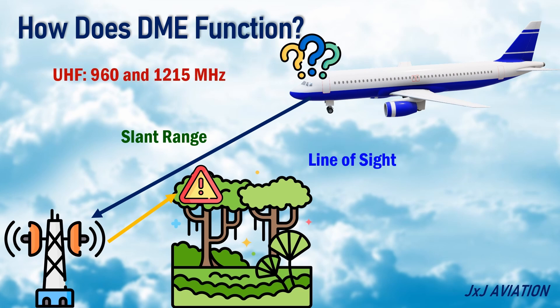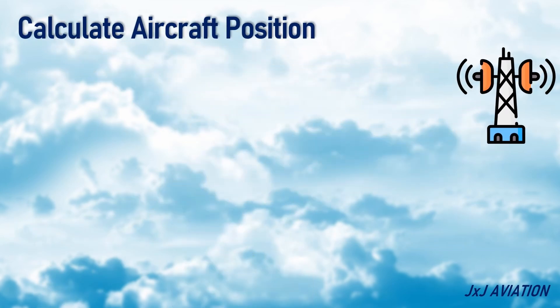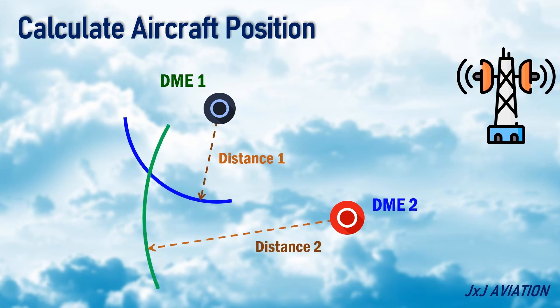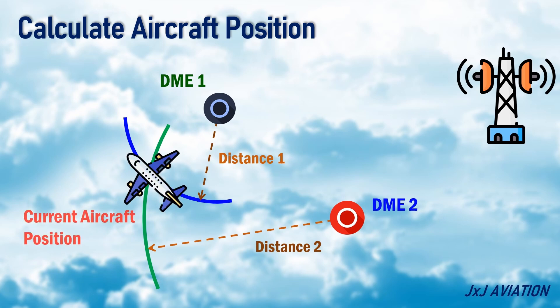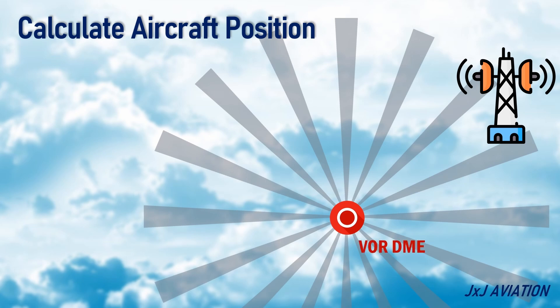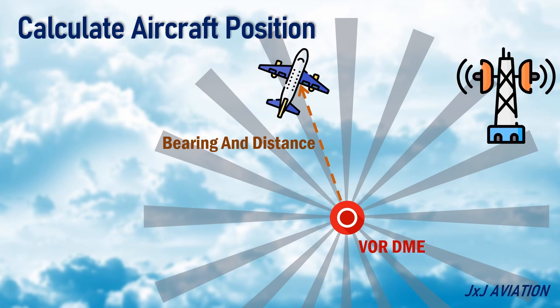Along with computing the distance, DME information can be used to calculate an aircraft's position as well. Distance information from two DMEs can be used to accurately determine an aircraft's position. The distances from two DMEs are received and arcs are created. The point where the arcs intersect gives the aircraft's current position. If the DME is coupled with VOR, this VOR-DME will provide the bearing and distance of the aircraft from the navigation aid, which is the aircraft's position.